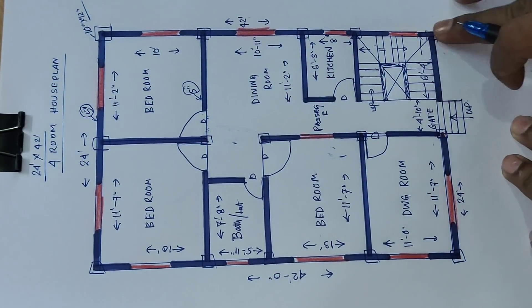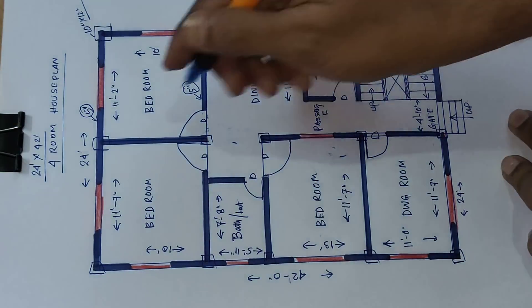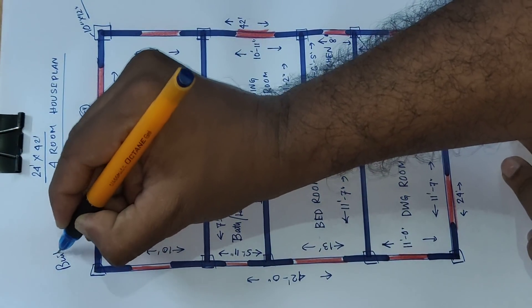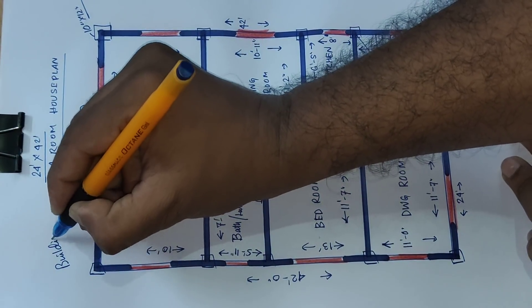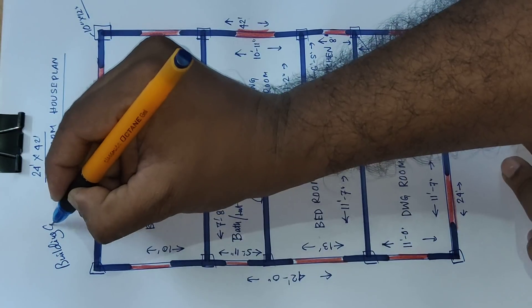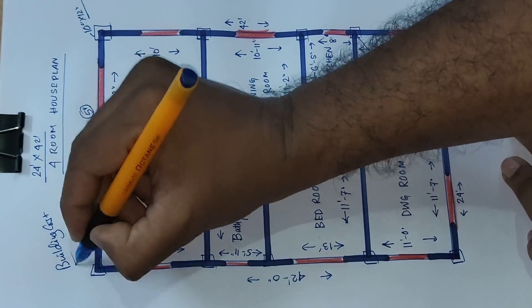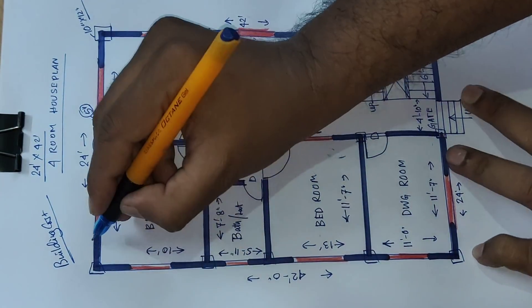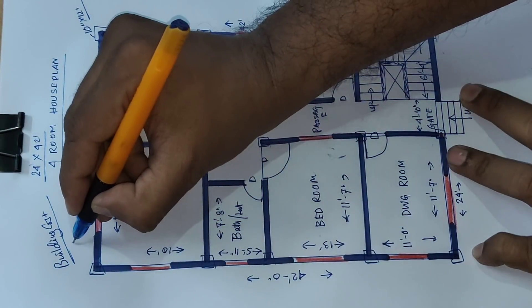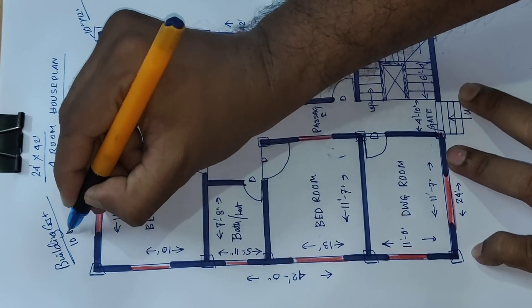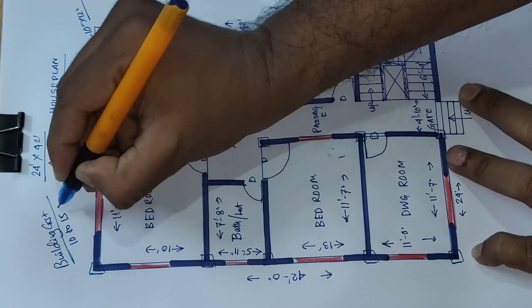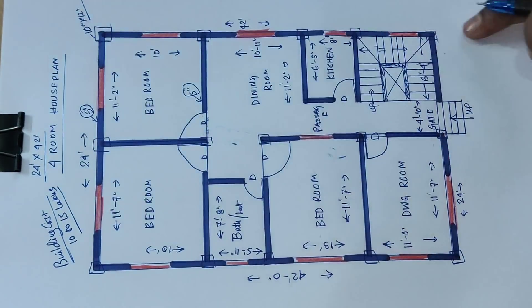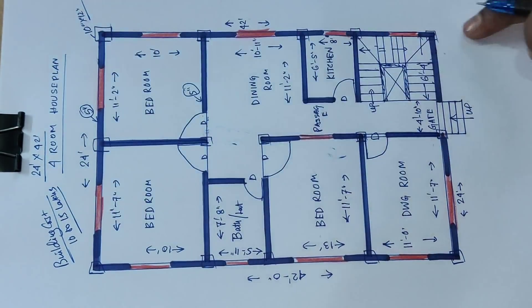Building cost: the building cost is 10 to 15 lakhs. Okay, 10 to 15 lakhs. Thank you for watching this video.